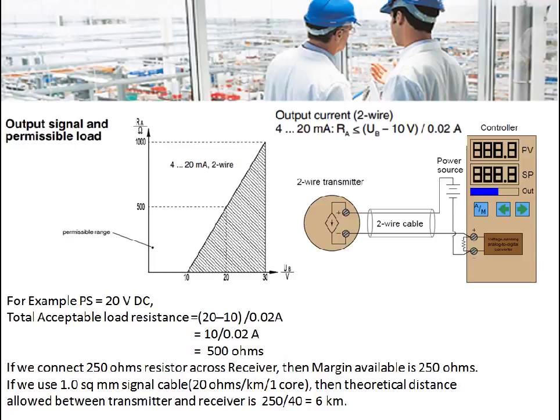This is how a 2-wire transmitter is connected to the controller. The power source is in series with the transmitter and the controller. In the controller, the current is converted to voltage and then it is further processed by the controller using the ADC.